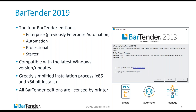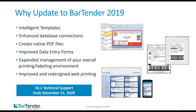Bartender 2019 is compatible with the latest Windows versions and has a greatly simplified installation process involving basically a single Bartender software program. Each customer uses a unique product license key code to activate the Bartender software to the appropriate edition level they've purchased. All Bartender 2019 editions are also licensed by the number of printers used.